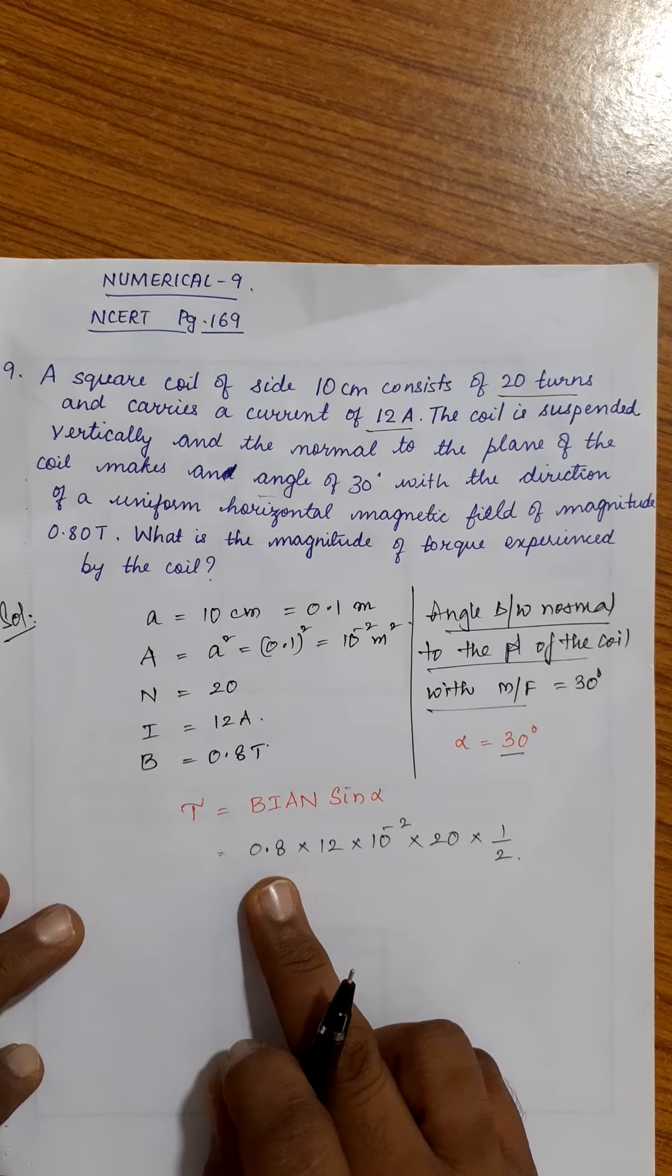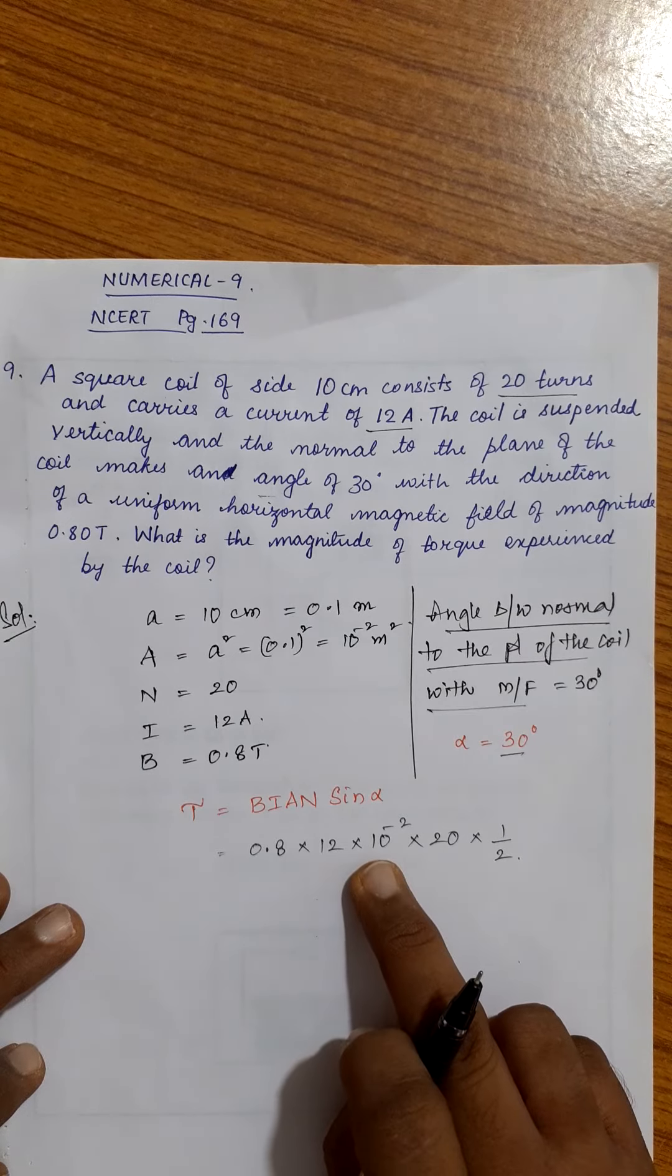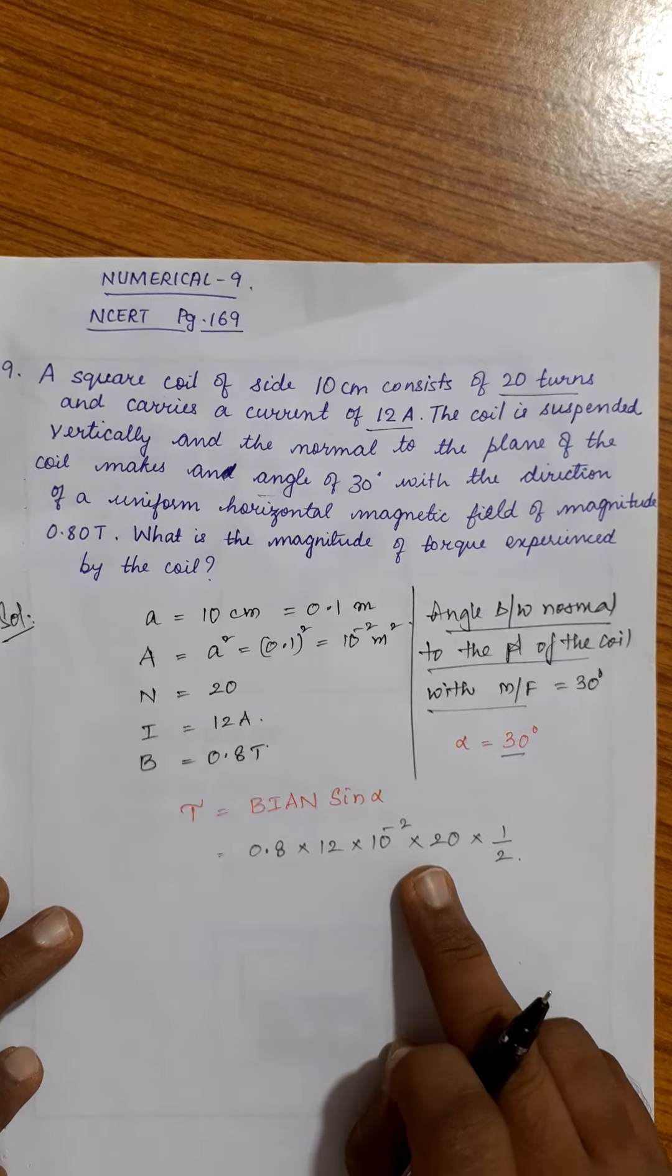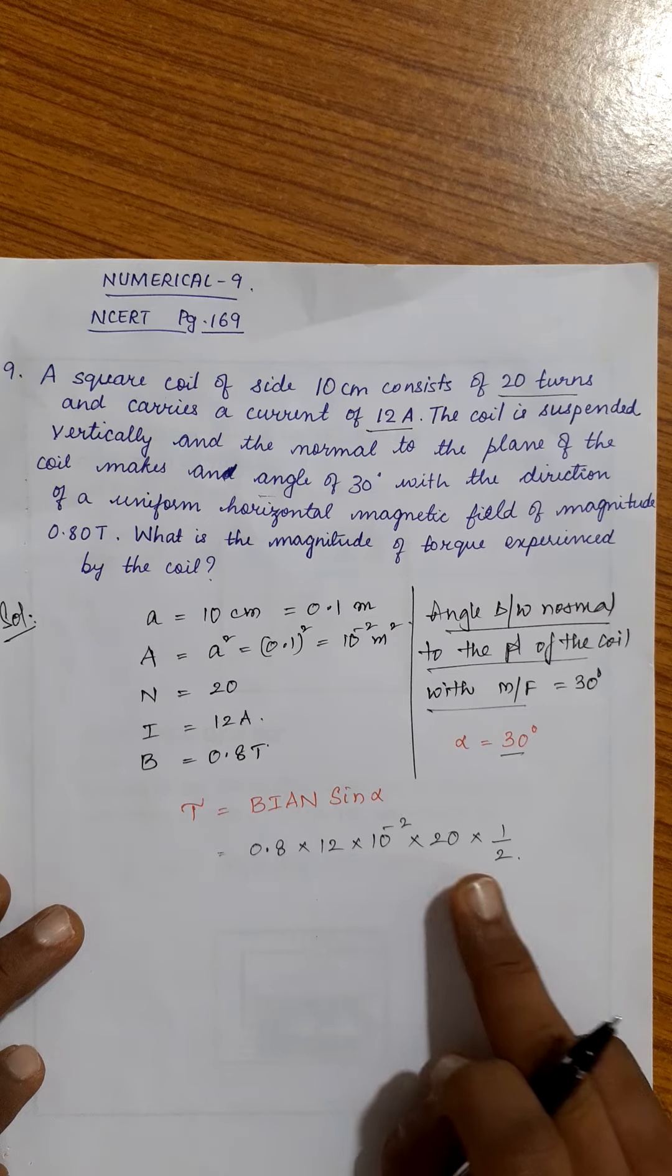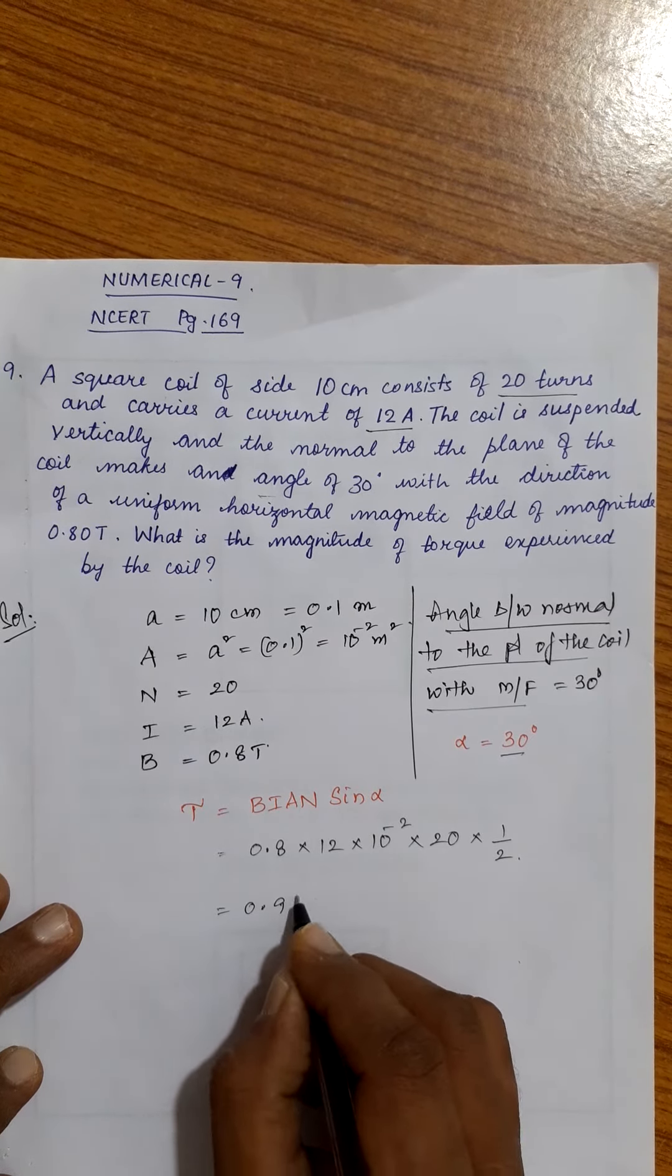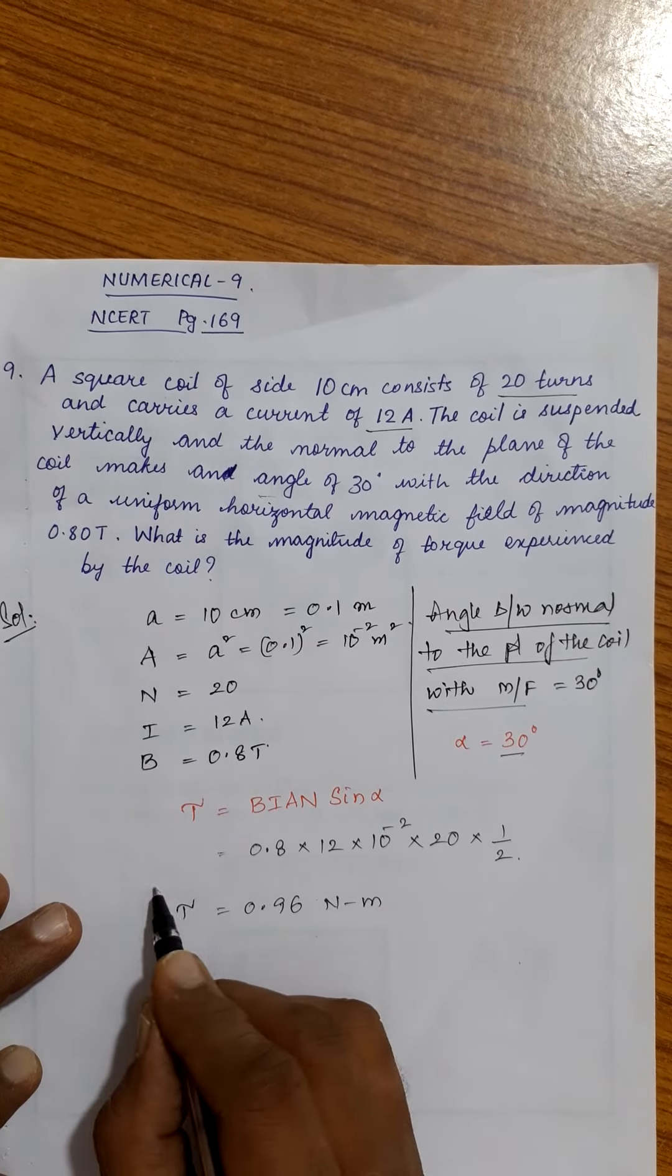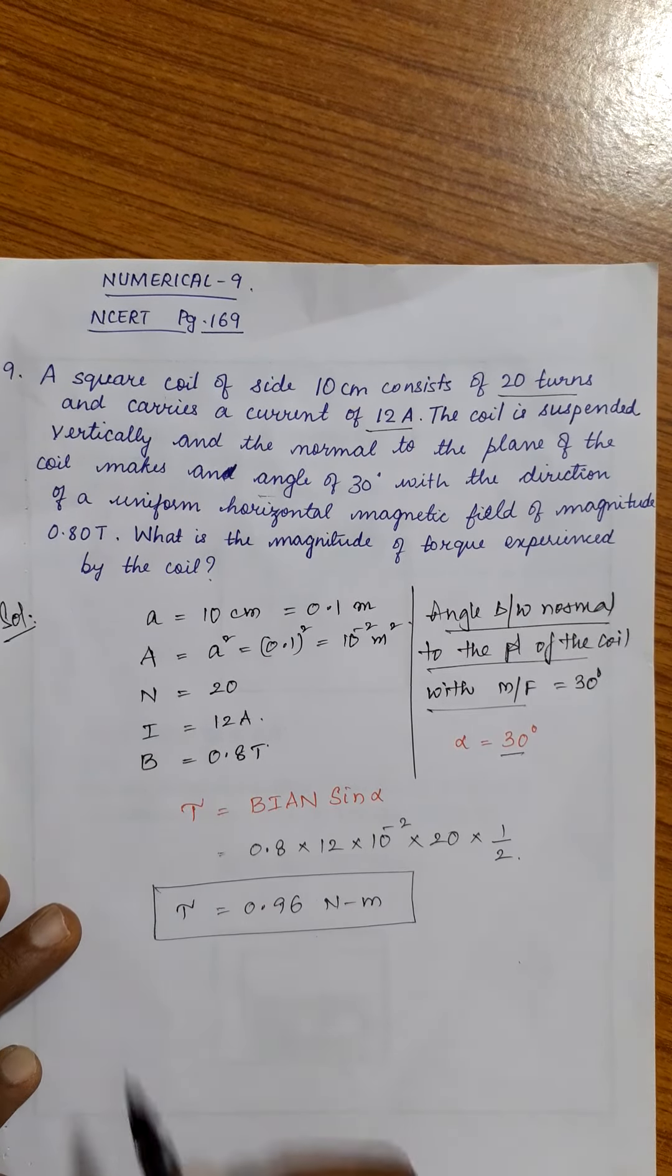0.8 is the magnetic field, 12 is the current, 10 power minus 2 is the area, 20 is number of turns. This sine 30 is 1 by 2. The answer would be 0.96 newton meter. The torque on the current loop is given by 0.96 newton meter.